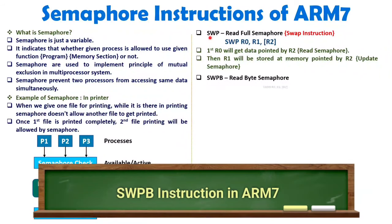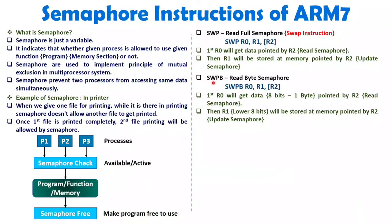There is one more instruction used with semaphore: SWPB. With SWP, the size of the semaphore is 32 bits. But with SWPB, you read only one byte of the semaphore. You still load the content of the memory pointed by R2 into R0, and store the value of R1 at the same memory location pointed by R2, but with SWPB the size is one byte. The lower 8 bits of R1 will update the semaphore status.